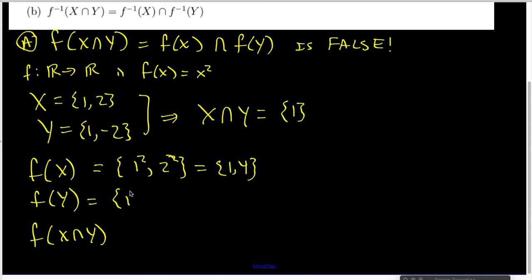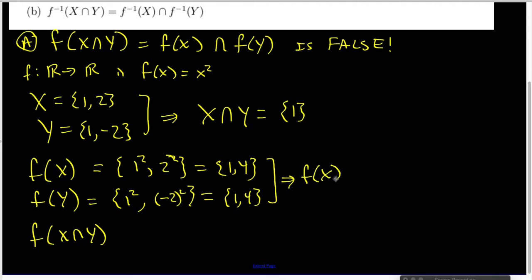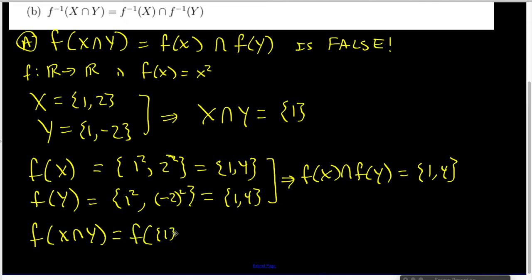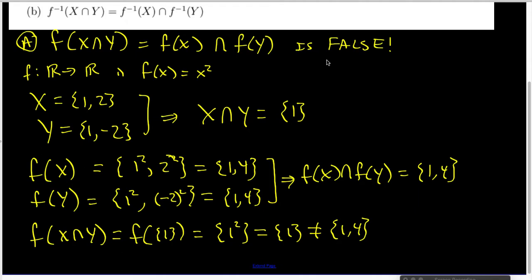f(Y) will be {1², (-2)²}, which is also the set containing 1 and 4. So f(X) ∩ f(Y) is the set containing 1 and 4. But f(X∩Y) is f of the set containing 1, which is just the set containing 1. That is not the same as the set containing 1 and 4, and hence we know this first statement is indeed false.